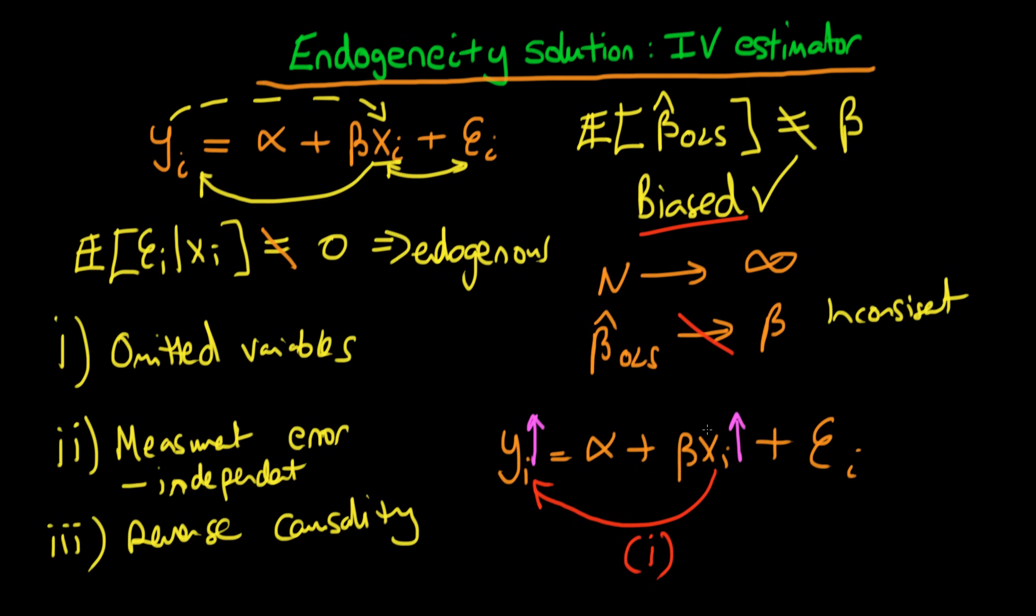But the problem is if x increases, we know that that's going to be associated with some change in our error term, because one of these three things must be acting if we have endogenous errors. So in the event that our omitted factor is correlated with our independent variable—so reason one for endogeneity—